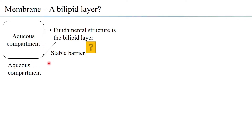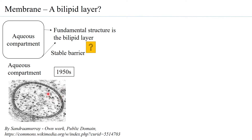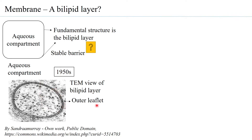By the 1950s, because of transmission electron microscopy, it was clear that the membrane definitely had two layers. You can see very distinctively two layers observed. This is the transmission electron microscopy view of the bilipid layer, in which the outer layer is considered to be the outer leaflet and the inner layer is considered to be the inner leaflet.